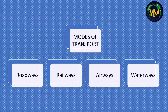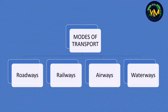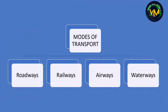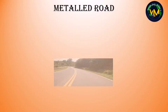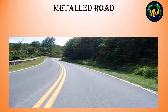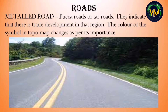Now there are 4 major modes of transport: Roadways, Railways, Airways and Waterways. Let's see the conventional symbols for each one of them one by one. First, roads. Roads can be divided into two: metal roads and unmetalled roads. Metal roads are paka roads or tar roads. They indicate that there is trade development in that region, and the color of the symbol used for a metal road in a topo map changes as per its importance.